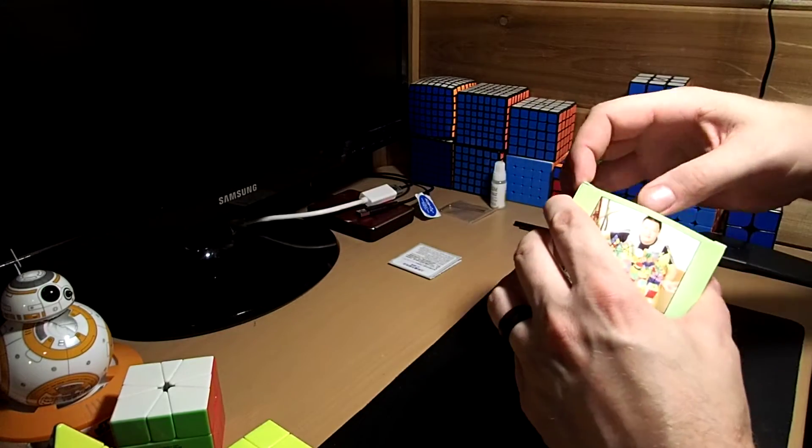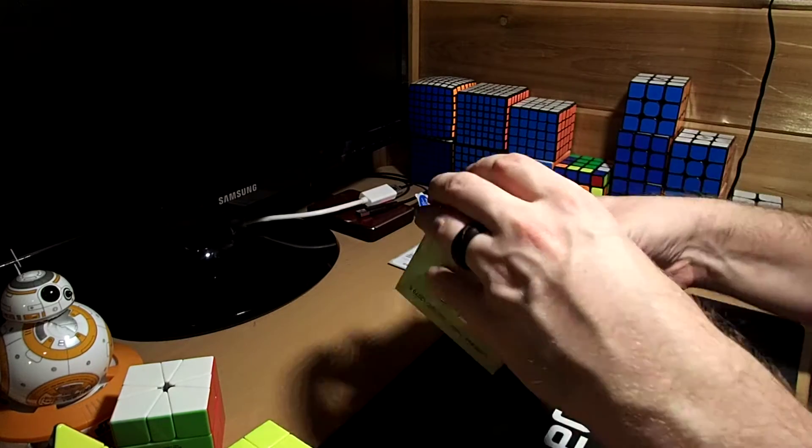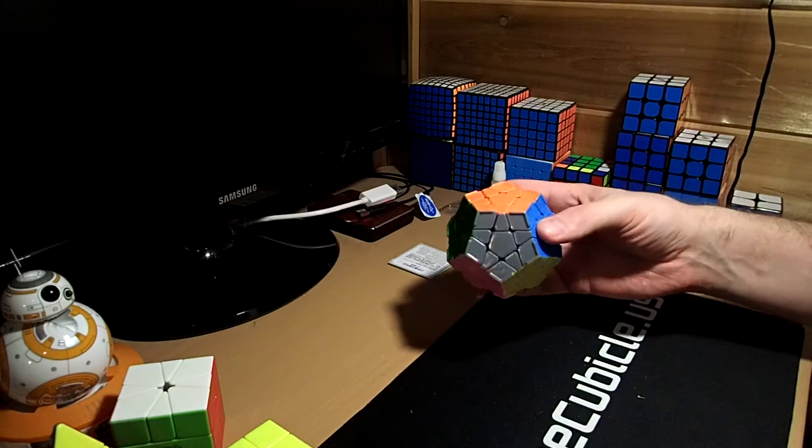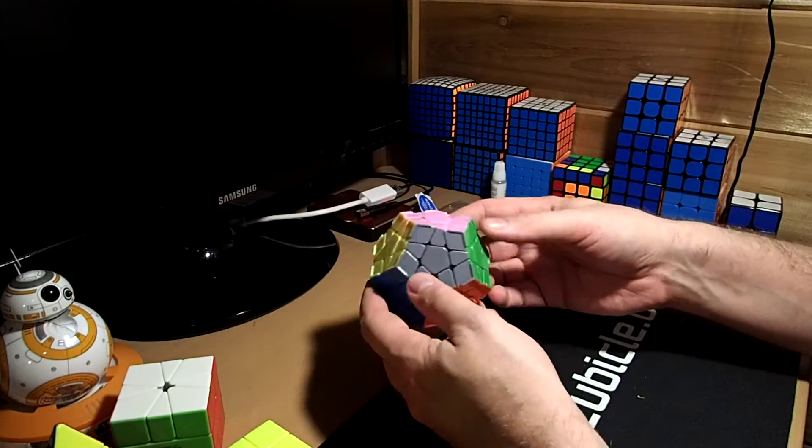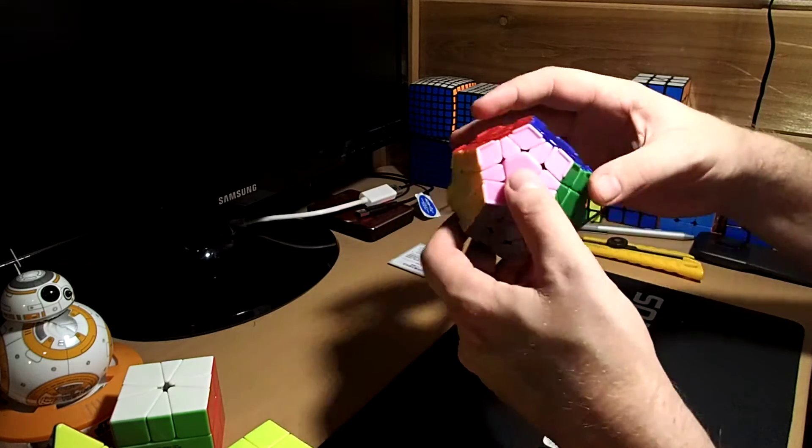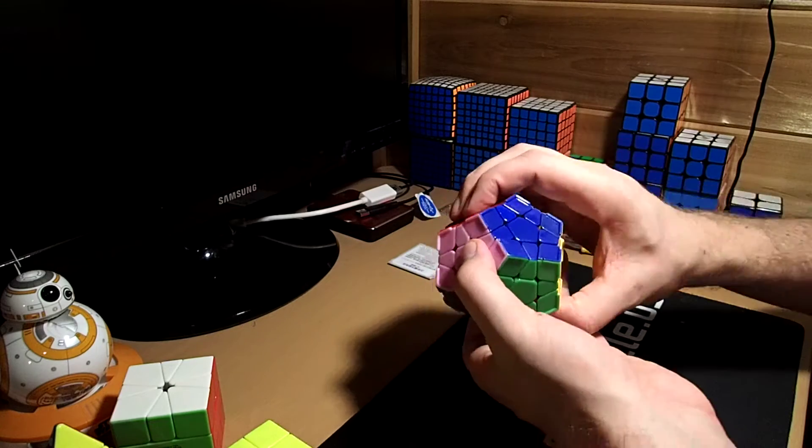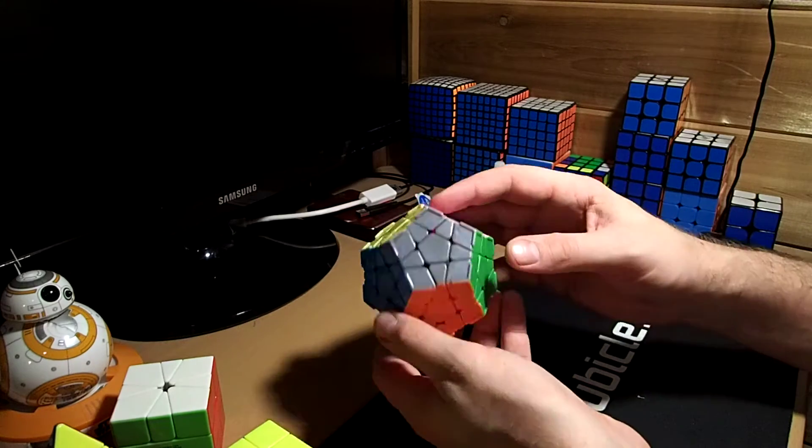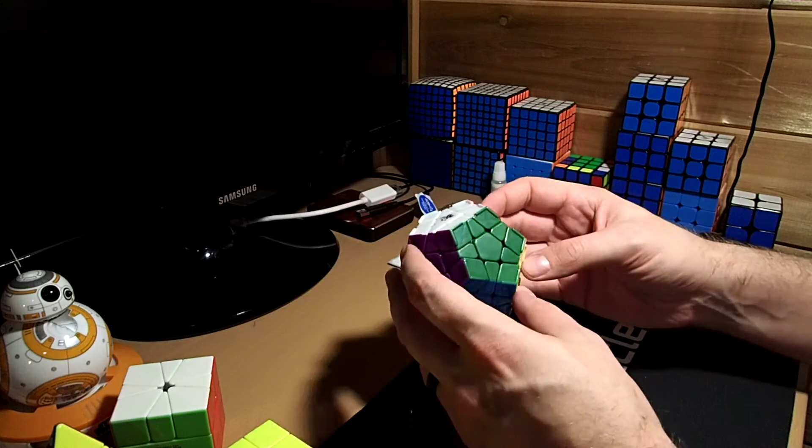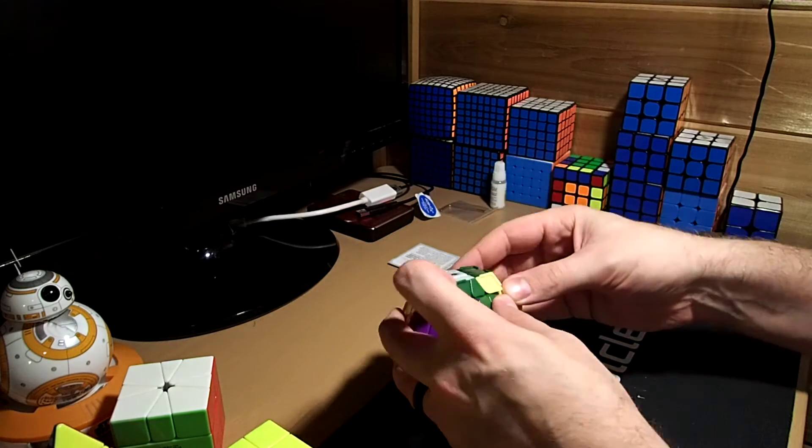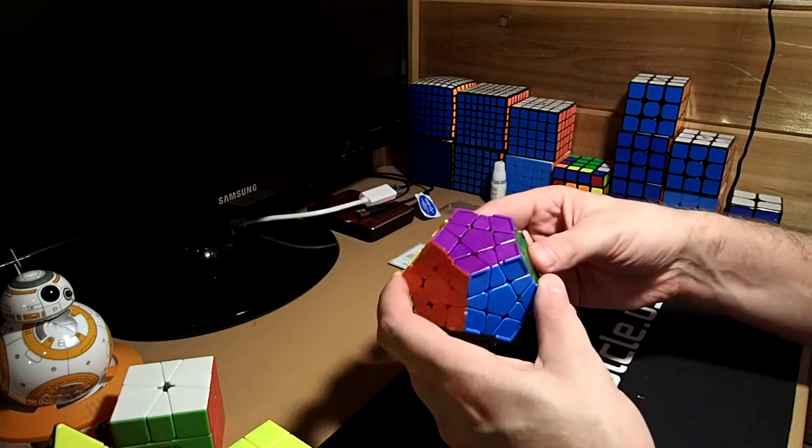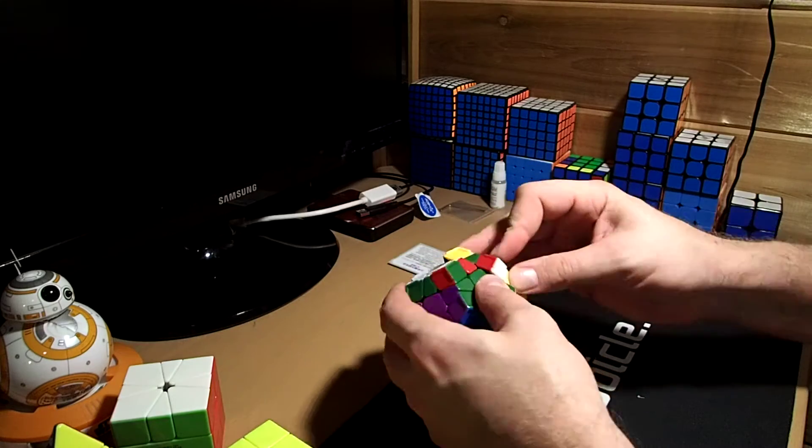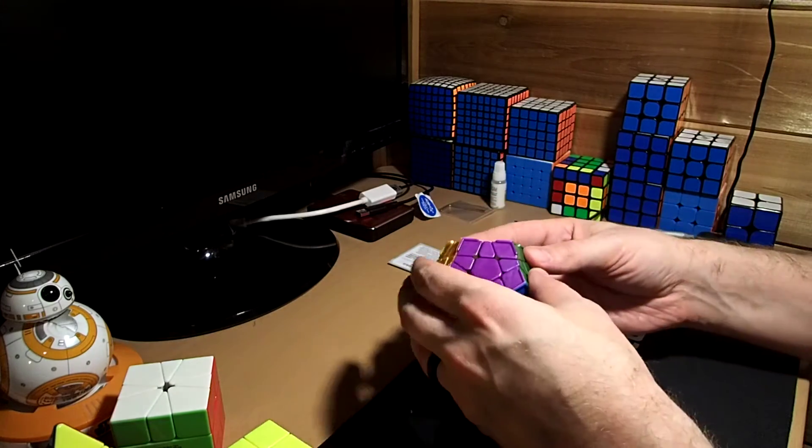Alright, this is the Dayan Megaminx with ridges. Okay. Not a big fan of the pink. Oh, we've got a bad cap here. Oh, that's fine, just popped out a little bit. Yeah, pink, not a big fan. But I mean, whatever. What do you do when you've got to cover this many sides with unique colors? It's pretty stiff, but it feels like it doesn't really have any lube in it. Yeah, it's pretty dry. I may have to lube this. These ridges feel strange.